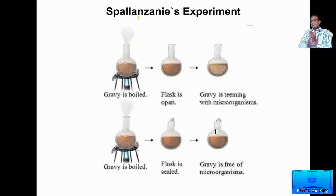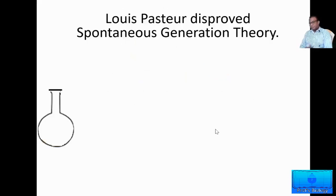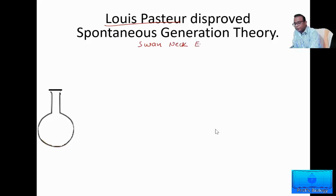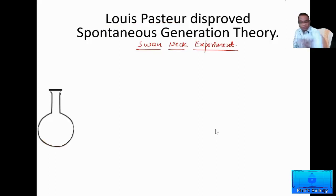These experiments meant to disprove the theory of spontaneous origin of life were mainly using microorganisms. The famous microbiologist Louis Pasteur — the father of microbiology — finally performed this experiment called the swan neck experiment. Louis Pasteur also used microorganisms to disprove the theory of spontaneous origin of life, and this became the ultimate experiment which finally disproved all claims made by people who believed in spontaneous origin of life.